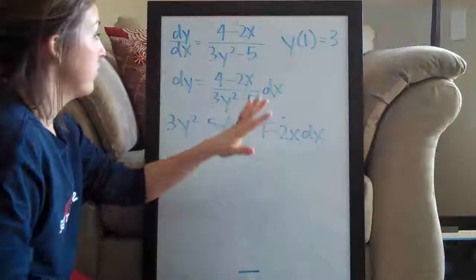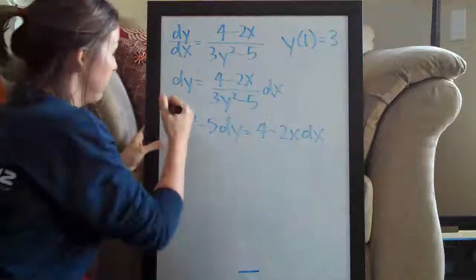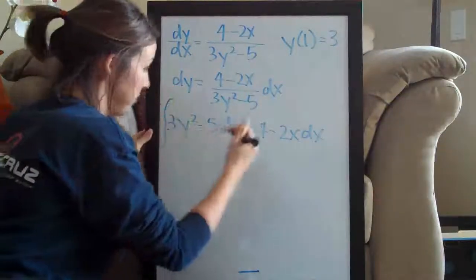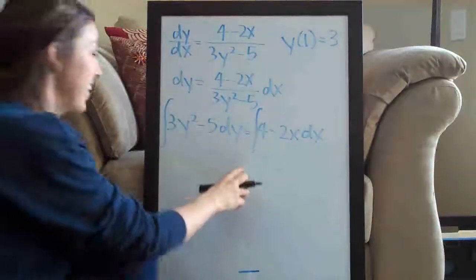That was the first step in this separable equations problem. The second step is to integrate both sides. So we go ahead and draw our integral signs and integrate.